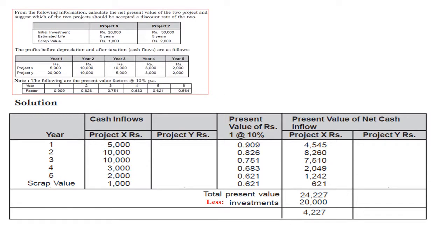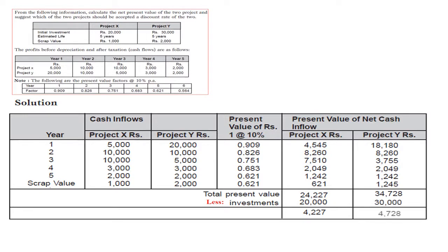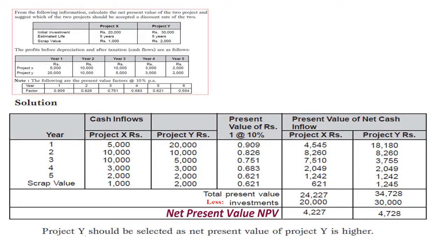For project Y, the cash inflows are 20,000; 10,000; 5,000; 3,000; 2,000; and 2,000 (scrap), multiplied with the present value factors at 10% starting with 0.909. Once we get the present value of cash inflows and make the summation, we deduct the investment of 30,000. The NPV of project Y is 4,728. Comparing: project X NPV is 4,227 and project Y NPV is 4,728. Since this is a mutually exclusive project scenario, project Y is selected as it gives the highest NPV.